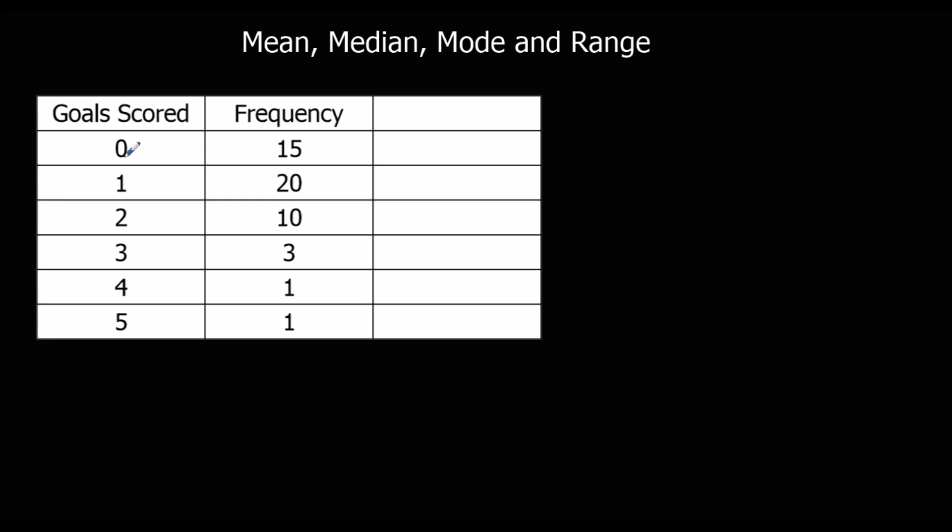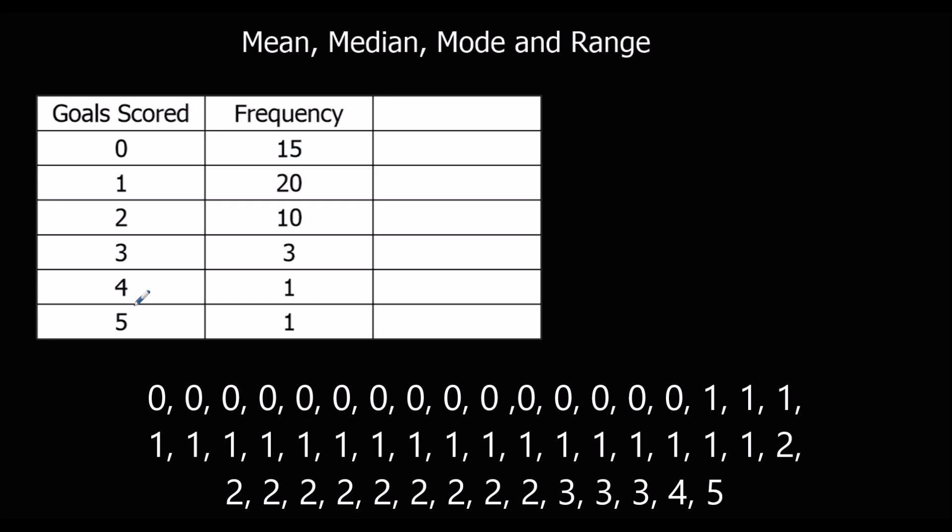There's zero goals scored for a frequency of 15. That means there are 15 zeros. So if we did lay this out as a list of numbers, it would go 0, 0, 0, 0, 15 times.